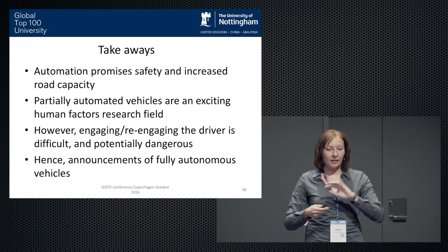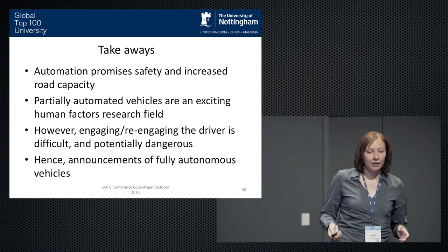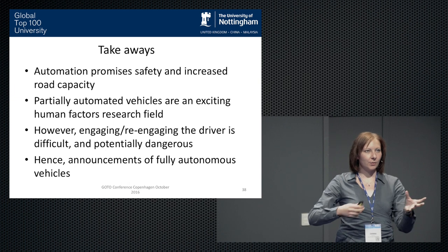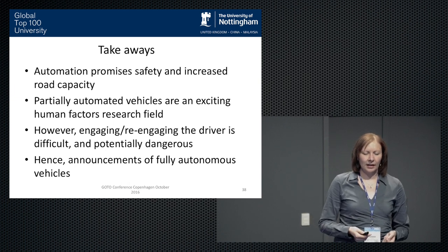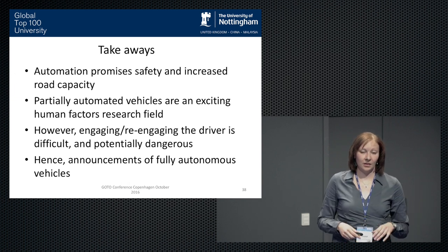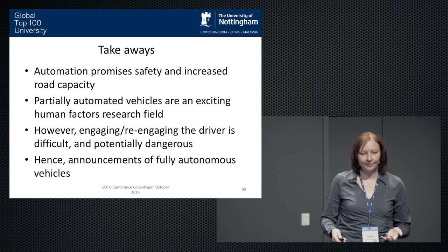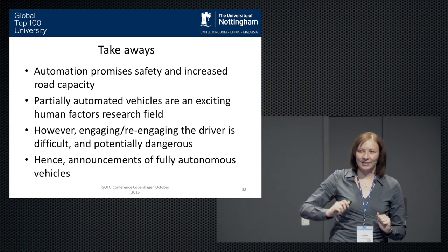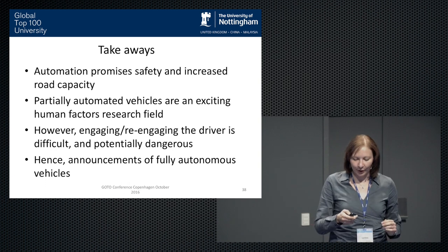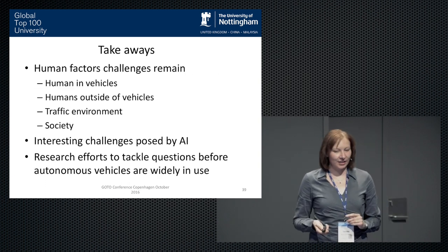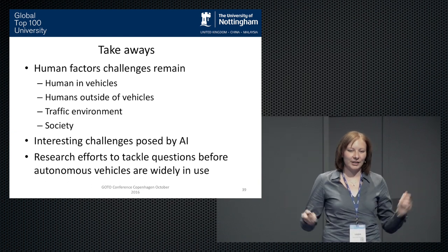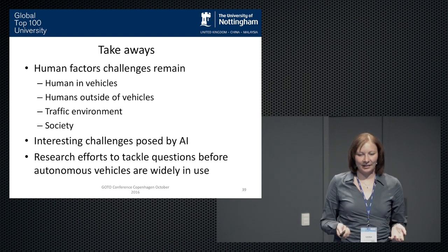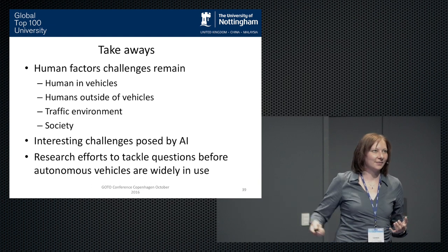As a summary, there are loads of promises and expectations that come with automations that are supposed to increase safety and road capacity. But at the moment, as we are in those intermediate levels of automation, it's a very exciting research field, but it's very problematic to engage or re-engage the driver when it's necessary. Hence, several car manufacturers and technology companies are getting together to go all the way to full automation. But the human factors challenges still remain. We still have the humans in vehicles and outside of the vehicles and the environment and society. And there are interesting challenges coming with artificial intelligence. And we're trying our best in research to tackle these questions now before autonomous vehicles are actually out there properly in use.